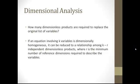How many dimensionless products are required to replace the original list of variables? If an equation involving k variables is dimensionally homogeneous, it can be reduced to a relationship among k minus r independent dimensionless products, where r is the minimum number of reference dimensions required to describe the variables.